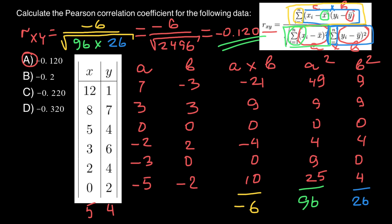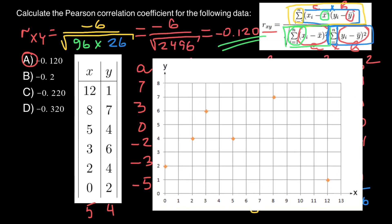As usual, don't forget to plot the numbers in the scatter plot, and we will see that there is no strong correlation between these two data sets. Those calculations show us a weak negative correlation. Probably if we had more data, we would be more sure whether there is a correlation between these two data sets or not.